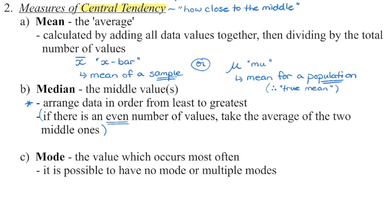There are two ways to represent mean. If we see the symbol X-bar, that's the mean of our sample. Mu — it looks like a handwritten U with a longer tail — is the mean for the population. Because this is the mean for everybody, it's a more accurate number; this is our true mean, but X-bar is the one we'll most often be using.